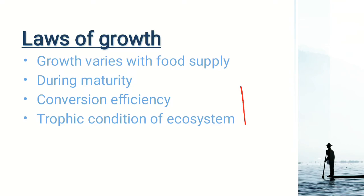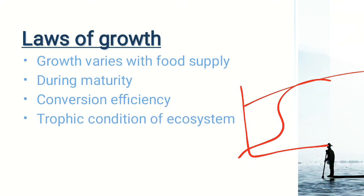Growth in length, weight, and fecundity of a population follows a sigmoid curve — that is, the S-shaped curve — and then it reaches the carrying capacity. In the initial life cycle, these biological factors increase with age, but once the population reaches its maximum size, these factors decline. Laws of growth show that if food increases, population increases, but if food is limited and population is growing, the growth rate will decline.